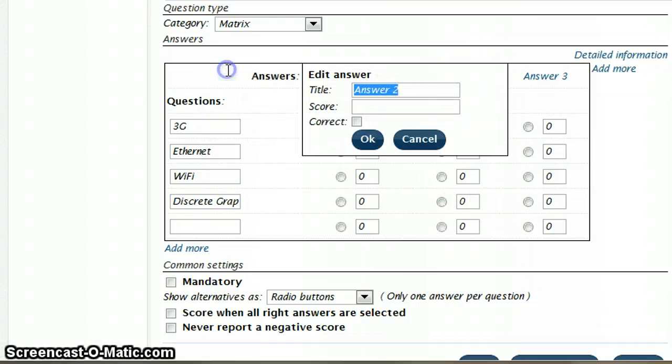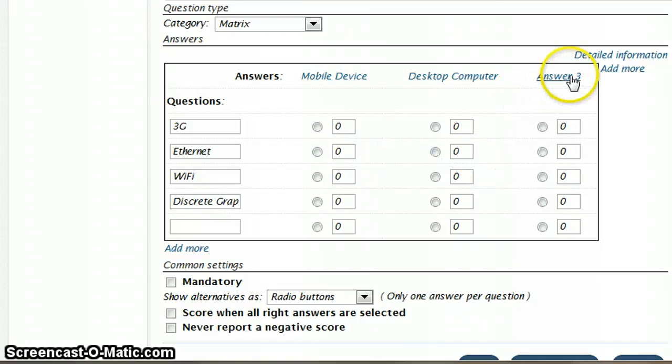So I'm just going to say OK to that. My second answer is going to be desktop computer. Again, I'm leaving score and correct blank, and just say OK to that.